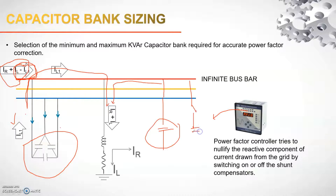Since we need multiple capacitor banks connected through switches to the bus bar, we need to understand what minimum and maximum values of capacitor bank are required. We cannot blindly connect any size — connecting one KVAR, two KVAR would be an economically huge loss. Hence a mathematical calculation is required.